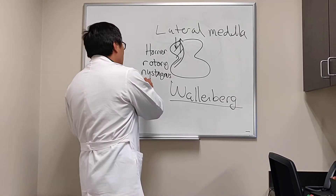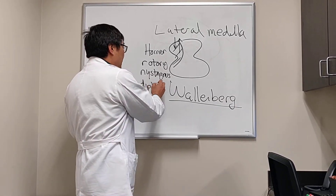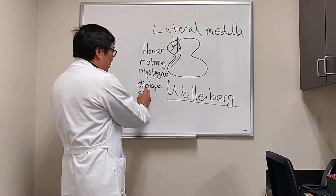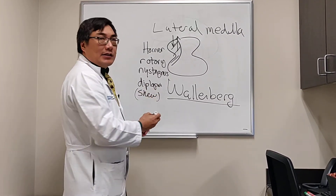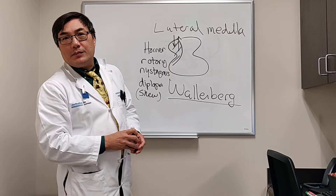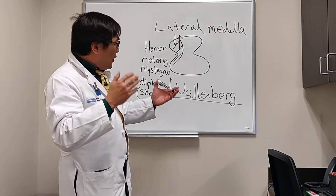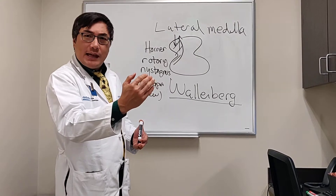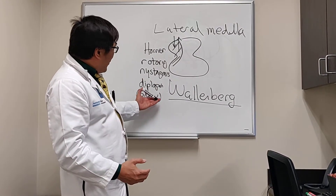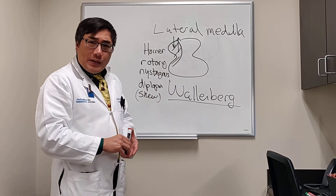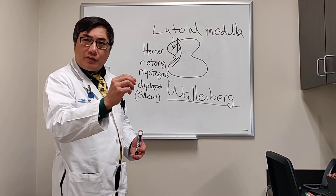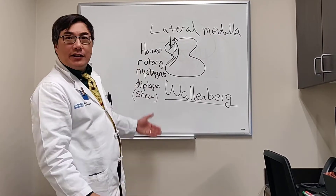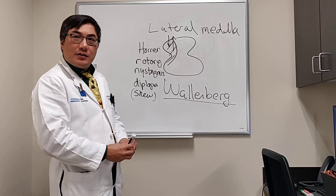The patient might also have diplopia from skew deviation. A skew deviation is a vertical deviation that doesn't localize to a single muscle or muscle group, and it results from disruption of the otolith input at the level of the brain stem or cerebellum. So when we have diplopia, it doesn't have to be from cranial nerves 3, 4, or 6, which live rostrally in the midbrain and pons — it could be way down here in the medulla from skew deviation.